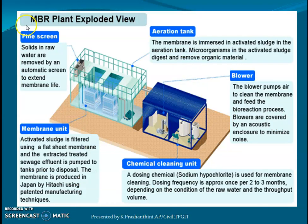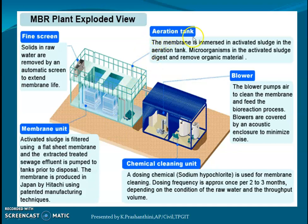The MBR plant consists of a fine screen, aeration tank, membrane unit, blower, and chemical cleaning unit. Fine screens are placed before the MBR to remove solids, thereby extending the life of the membrane. In the aeration unit, external air is introduced so that microorganisms in the activated sludge digest the complex organic matter in the wastewater and convert it into simpler organic matter.